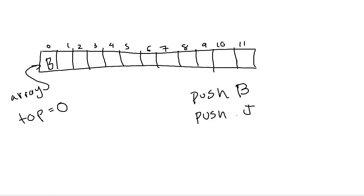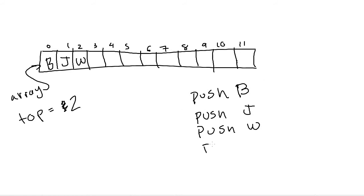Now let's push another letter, say J. Rather than scooting B over, which would be inefficient since we'd have to move everything down each time, we put the new character into the next open slot — which is one — and change top from zero to one. Then if we push W, it goes into slot two and top is incremented again to two. Each time you push, you take slot top plus one and put the new value there, then increment top.